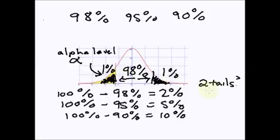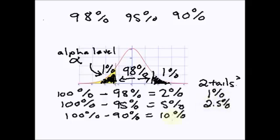So for a 2-tail test, my alpha level is 1%. For a 95% confidence level with 2 tails, it is going to be 2.5%. And for a 90% confidence level with 2 tails, it is going to be 5%.